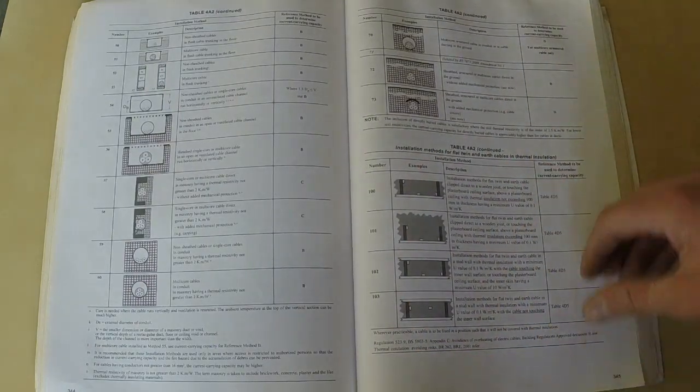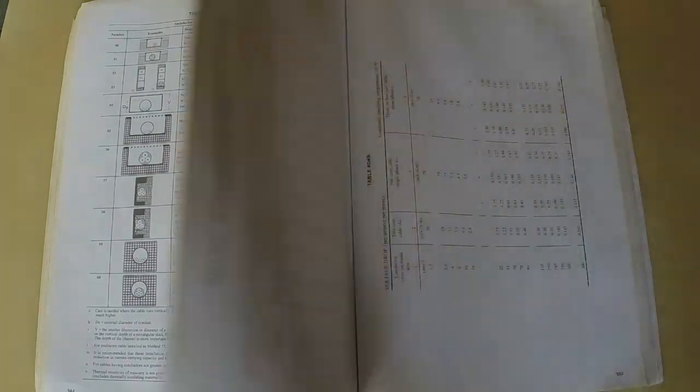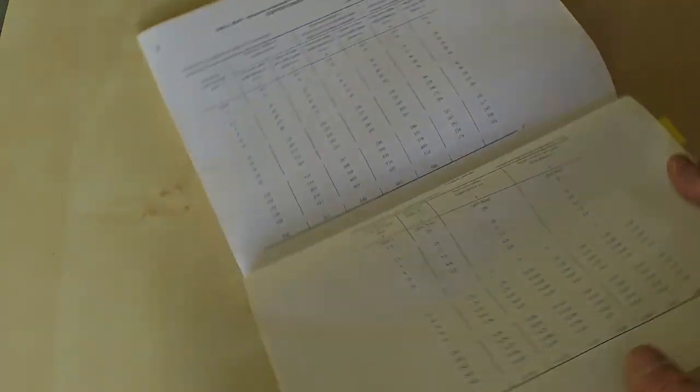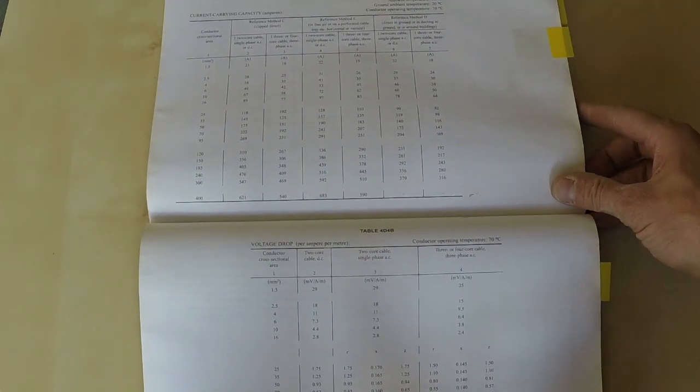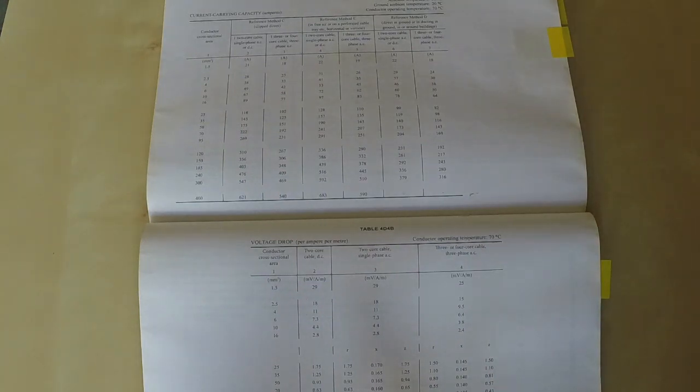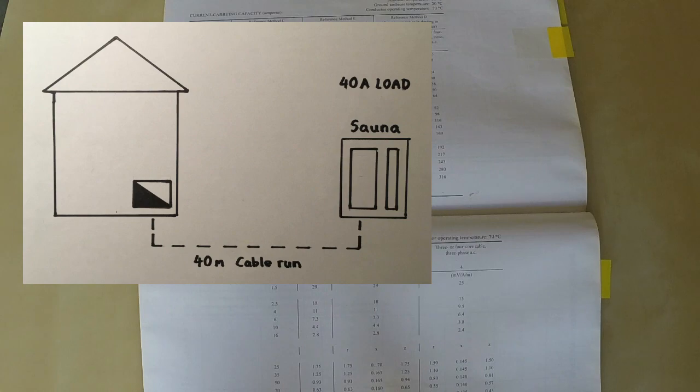Now we're basically going to be installing, let's say, an SWA from a house to an outhouse. In that outhouse we want to put a sauna. The sauna, which is the load, let's say that's 40 amps.